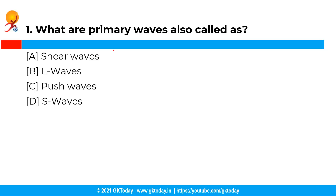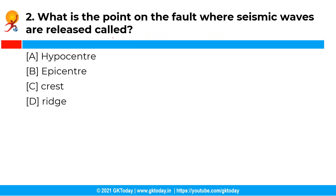The first question is: what are primary waves also called as? You have the following options and the correct answer is option C, that is push waves. Primary waves are also called push waves. They are similar to sound waves and the particles move in the direction of the wave movement.